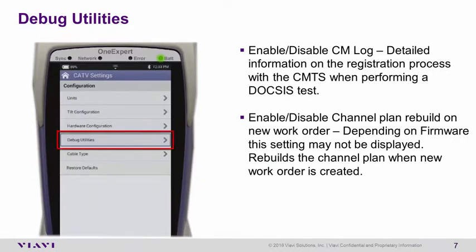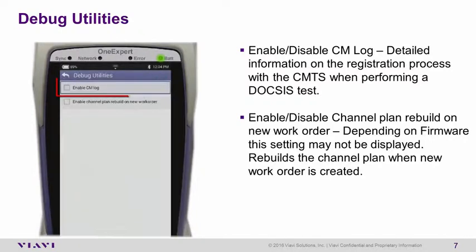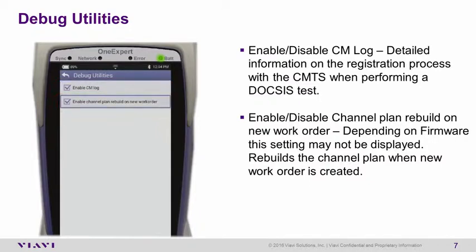The Debug Utilities parameter, when opened, allows you to enable or disable the CM log, or enable and disable the channel plan rebuild on new work order created. By selecting either option and placing a check mark in the box, you can enable or disable these two setups.